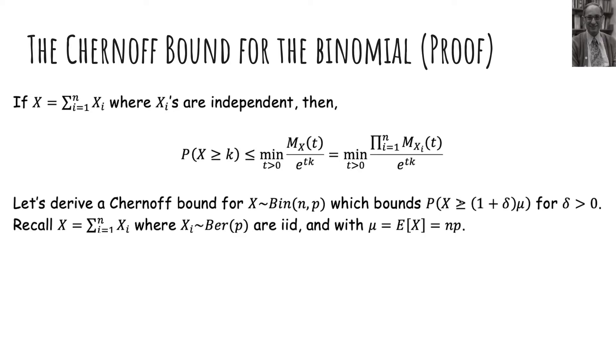And so we're going to try to derive a Chernoff bound for the binomial. And the form of it is going to be the probability x is greater than some multiple of its mean. So for example, I want to bound the probability that x is greater than three times its mean or something like that. Recall, x is a sum of independent Bernoulli random variables, and the mean was np.